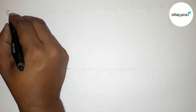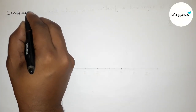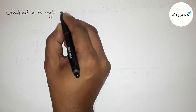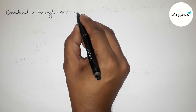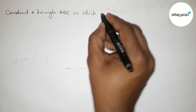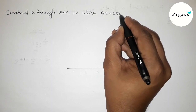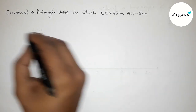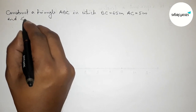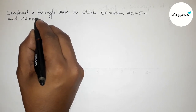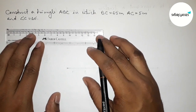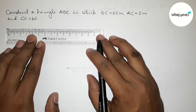Hi everyone, welcome to SI Share Classes. Today in this video we have to construct a triangle ABC in which BC equals 6.5 centimeter, AC equals 5 centimeter, and angle C equals 60 degrees. Please watch the video till the end. So let's start the video.